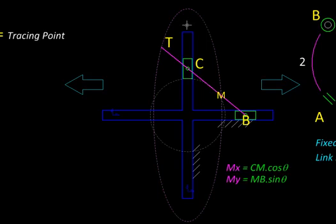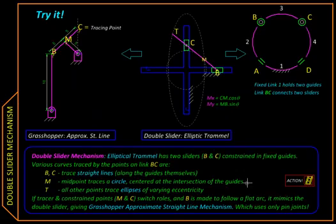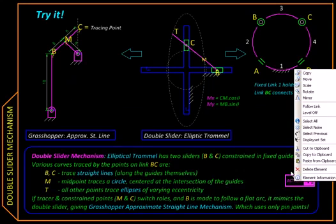Finally, there will be two special cases of these ellipses which are infinitely flattened into a double line segment. Those are the paths followed by point C in the vertical direction and point B in the horizontal direction.